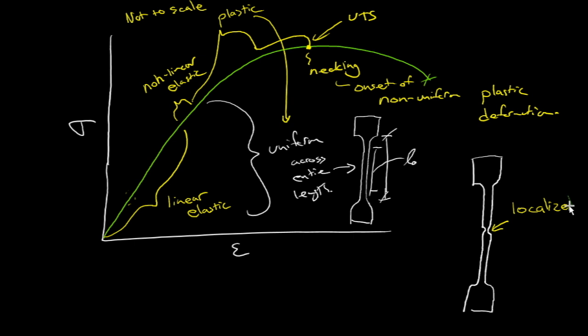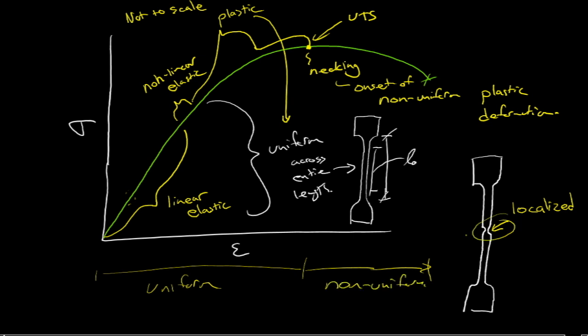It's localized plastic deformation. That's what necking is all about. So this is uniform up to the point of necking. The deformation is uniform up to necking. And then for a metal, all of the deformation that occurs after that is non-uniform. It's all localized there.